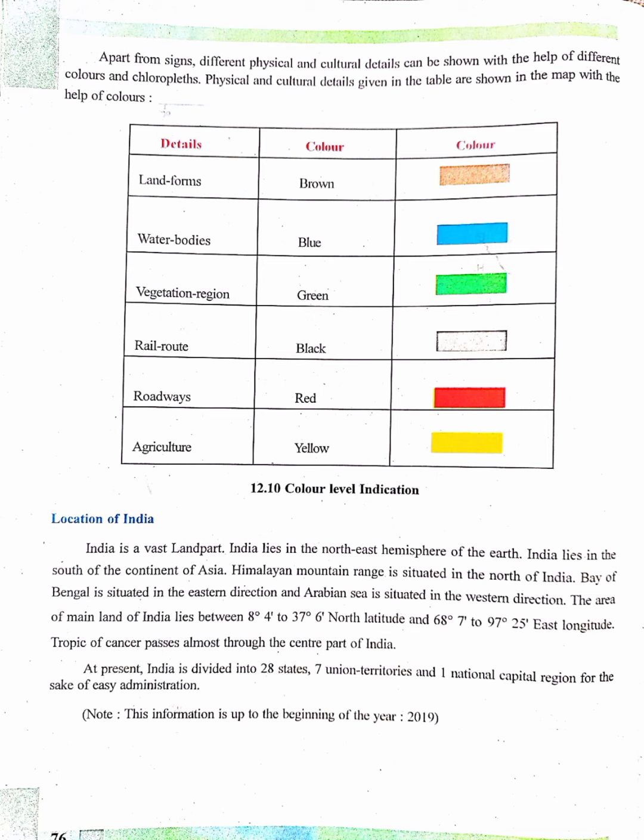India is located almost in the middle of South Asia in the north eastern hemisphere. It lies between 8 degrees 4 minutes and 37 degrees 6 minutes north latitudes. The western end of India is on 68 degrees 7 minutes east longitude and the eastern end is on 97 degrees 25 minutes east longitude. The Tropic of Cancer, 23.5 degrees north latitude, passes almost through the central part of India. The local time of 82 degrees 5 minutes east longitude, which passes almost through the middle of India, is considered to be the standard time of India.